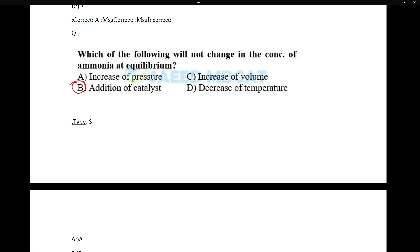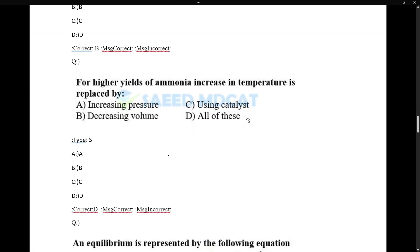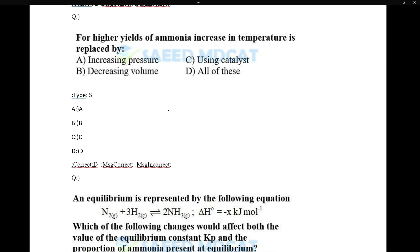Which of following will not change the concentration of ammonia at equilibrium? Addition of catalyst does not change. For higher yield of ammonia, increase in temperature is replaced by increasing the pressure, decreasing the volume. Charlie is the correct answer for higher yield.